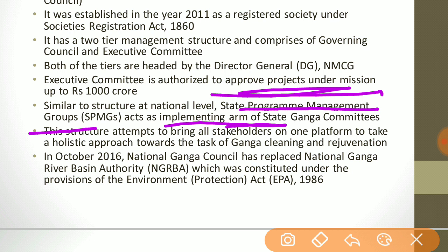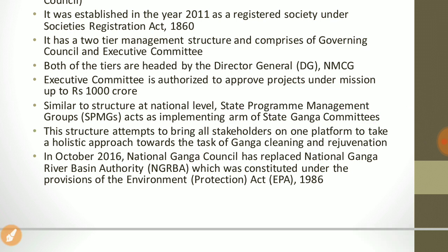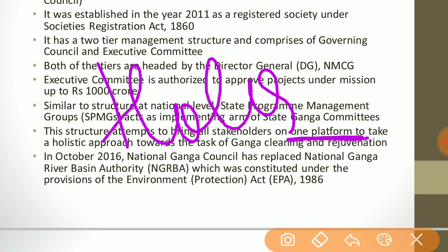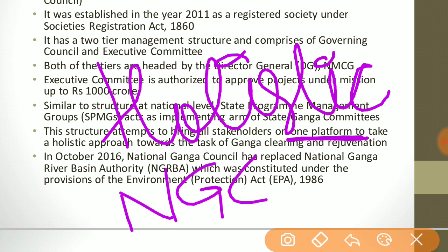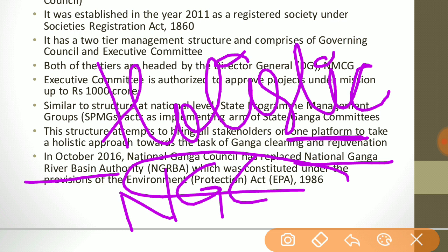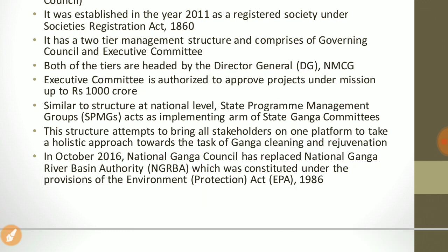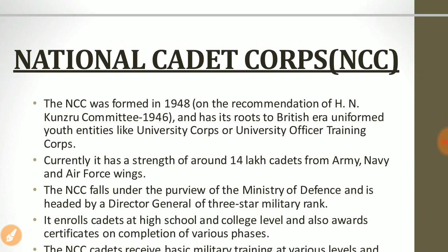At the national level, State Programs Management Groups act as the implementing arm of Ganga Committees. This structure attempts to bring all stakeholders on one platform to take a holistic approach towards the task of Ganga cleaning and rejuvenation. In October 2016, the National Ganga Council replaced the National Ganga River Basin Authority, which was constituted under the Environment Protection Act 1986.